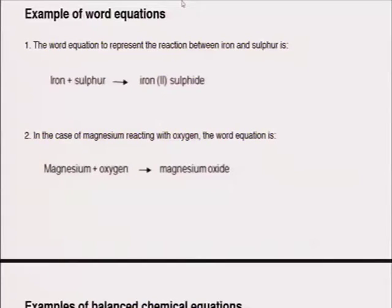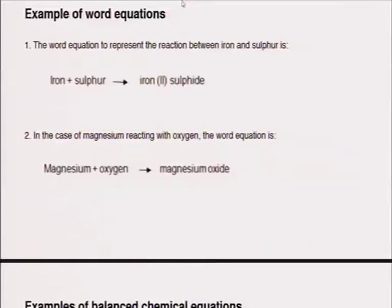Another important aspect for your exam is to be able to complete equations, either by writing full word equations or giving balanced chemical equations. For example, when iron reacts with sulfur, you write a word equation simply giving words of what happens. Iron reacts with sulfur and they give you iron sulfide, showing that two iron atoms will react with sulfur so that they all achieve their full outer shells.